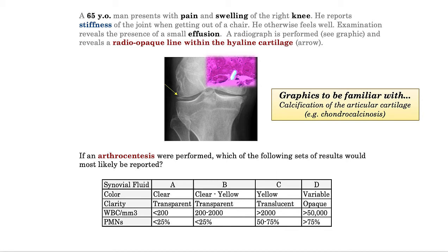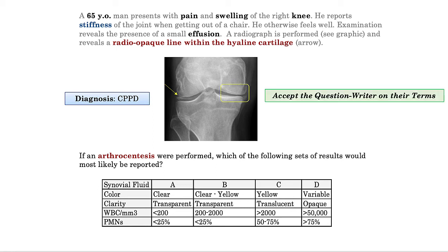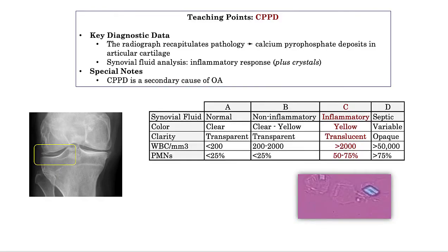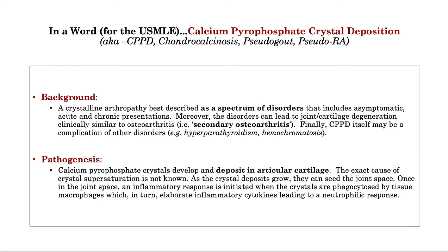The summary document at the end of this presentation clarifies the nomenclature of this disorder. Based upon the radiograph we've made our diagnosis, but they go on to ask the derivative question: what will be seen on synovial fluid analysis? I would caution you to accept the question writer on their terms — this patient does have some joint space narrowing, but they aren't asking about synovial fluid analysis in osteoarthritis. The question writer is clearly inquiring about CPPD, and the answer is C: an inflammatory joint fluid revealing crystals and no organisms. Be familiar with the radiographic description and the synovial fluid analysis — this is a recurrent theme. With this brief video, we've completed our curriculum on the crystalline arthropathies. I would encourage you to review the summary to clarify the nomenclature and the important association between CPPD and osteoarthritis.